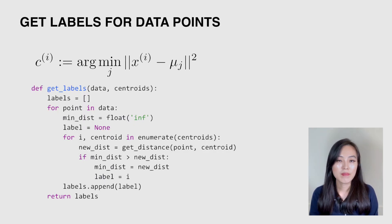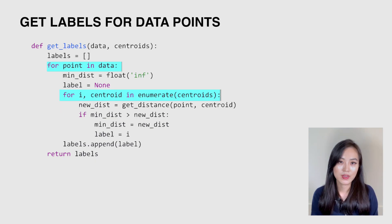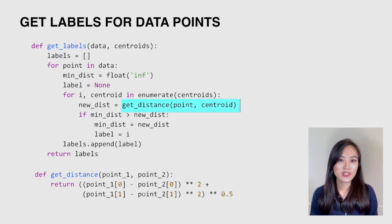Next, we'll get labels for each data point. Basically, we compute the distance from one point to all centroids and select the centroid with the shortest distance. Here we have two loops. The outer loop goes through all the points and the inner loop goes through all the centroids. When selecting the closest centroid, we first set the current minimum distance as infinity. Then we update the current minimum distance and assign the label to the new centroid when we find a closer one.